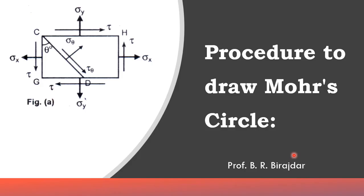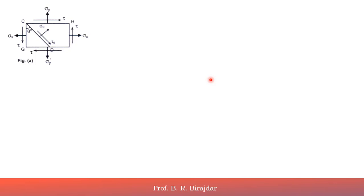Now we will see the actual procedure for how to draw the Mohr's circle. We have a given element on which sigma_x is the tensile stress acting along the x-direction, sigma_y is the tensile stress along the y-direction, and the shear stress tau is acting on the plane. We are also considering an oblique plane at an angle theta, measured from the vertical plane in the anticlockwise direction.